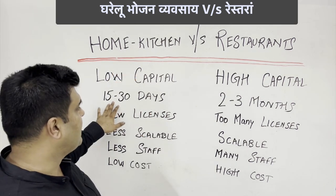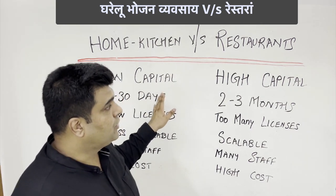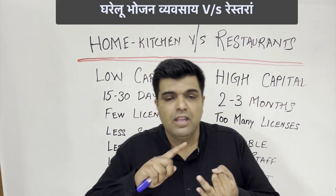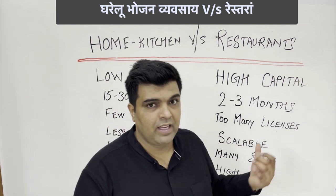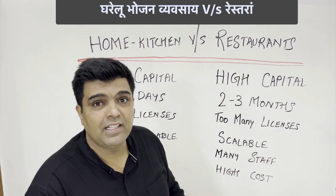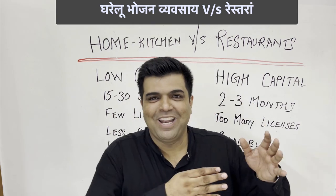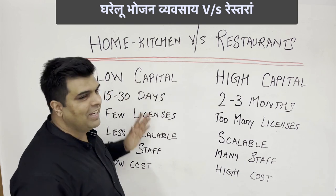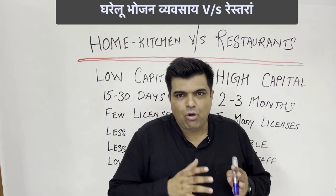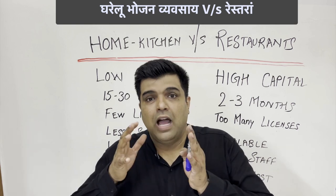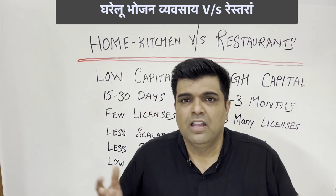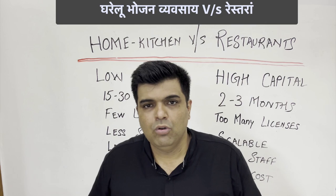The second advantage is that you can start a home kitchen in just 15 to 30 days. Comparatively, if you want to start a restaurant, you have to choose a location, pay a deposit, make an agreement, get licenses, set up kitchen equipment, do interior decoration, set up a cash counter and board — none of that is needed for a home kitchen. You simply name your business, define your USP (unique selling product), start marketing, and when orders come in, you make food.